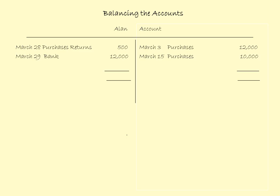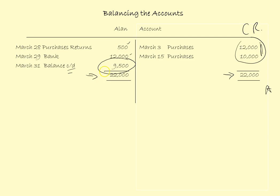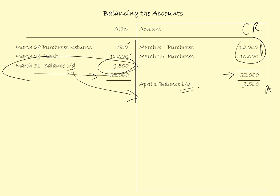Alan's account has several transactions — Alan is a creditor. We bought 22,000 euro worth of goods from Alan, sent back 500, and paid him 12,000, so there is still a balance owing. The credit side is the bigger side, total 22,000. The debit side doesn't add up to 22,000, so the difference goes in as the balancing figure: March 31st, balance carried down, 9,500. That figure is brought down onto the credit side: April the 1st, balance brought down, 9,500.